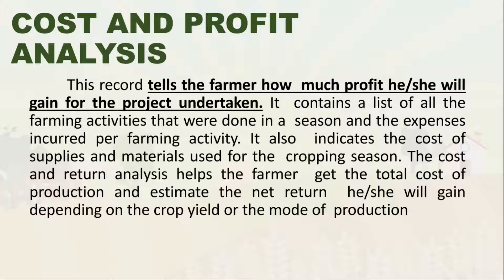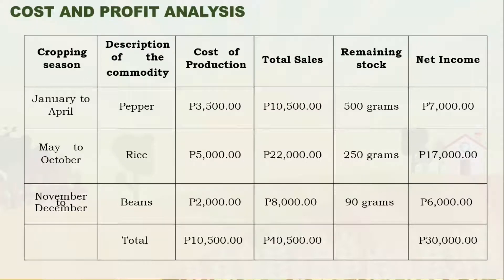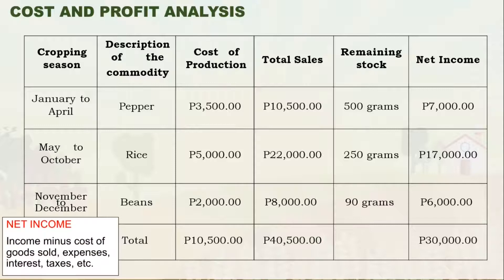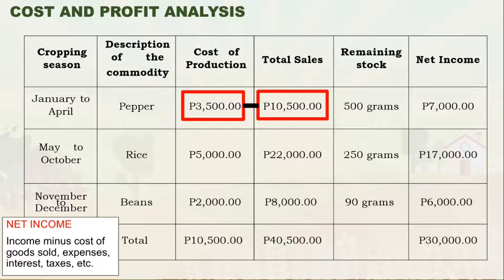The cost and profit analysis tells the farmer how much profit he or she will gain for the project undertaken. It contains a list of all farming activities done in a season, the expenses incurred per farming activity, and the cost of supplies and materials used for the cropping season. The cost and return analysis helps the farmer get the total cost of production and estimate the net return. The formula for net income is: total sales minus cost of production. For example, total sales of 10,500 pesos minus cost of production of 3,500 pesos equals net income of 7,000 pesos.